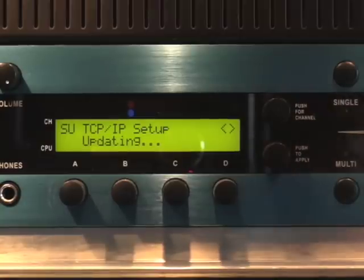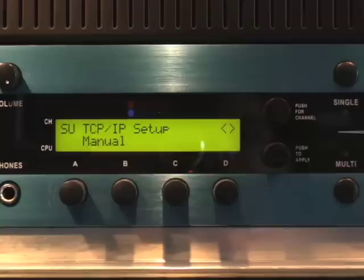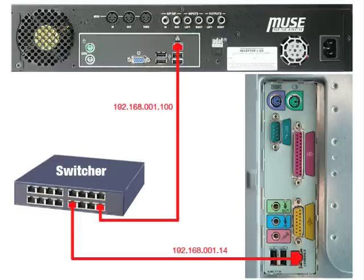Receptor will now put itself into Manual TCP/IP mode. Double-press Receptor's power button to shut it down. Make sure your switcher is on and then turn on Receptor. Assuming you've already assigned a different IP address to the computer connected to your switcher, Receptor and your computer will now talk to each other using their manually assigned IP addresses.